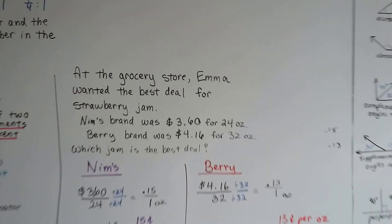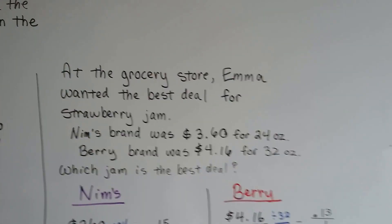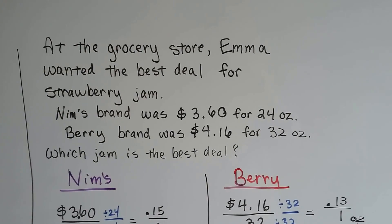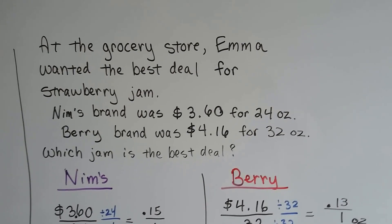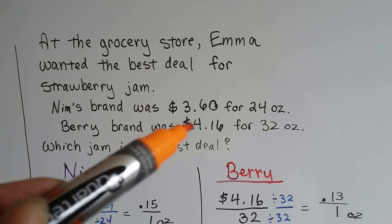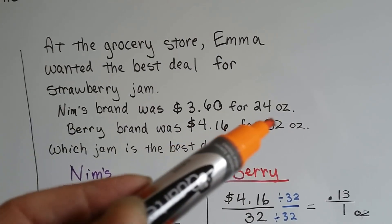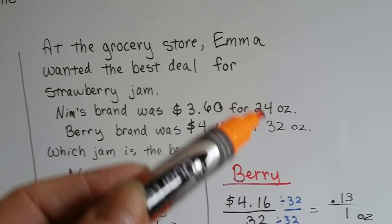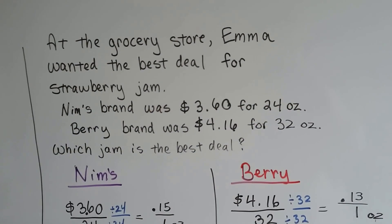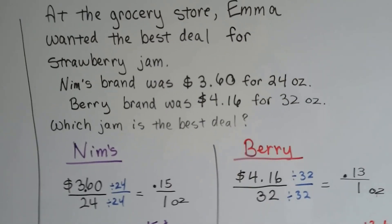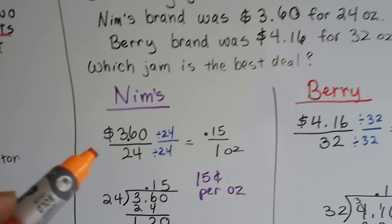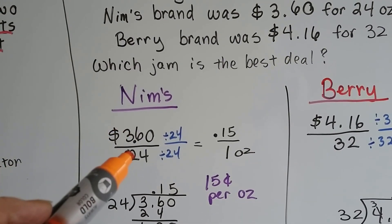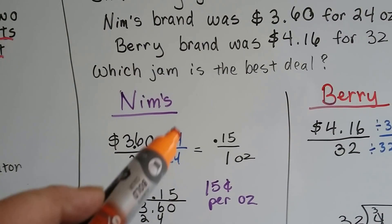At the grocery store, Emma wanted the best deal for strawberry jam. Nim's brand was $3.60 for a 24-ounce jar, and Berry brand was $4.16 for a 32-ounce jar. That's more money than the Nim's brand, but it's also more ounces — so what's the better deal? Which jam should she buy? Let's write the amount for Nim's over the ounces and divide both by the denominator.